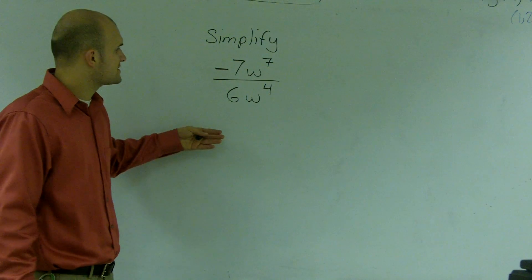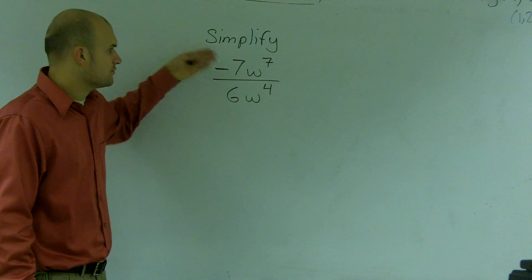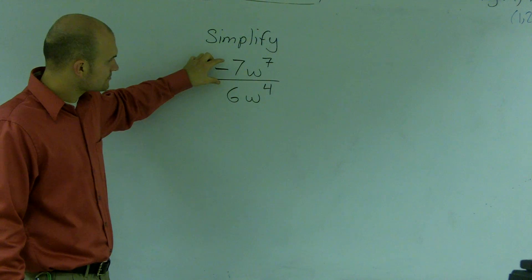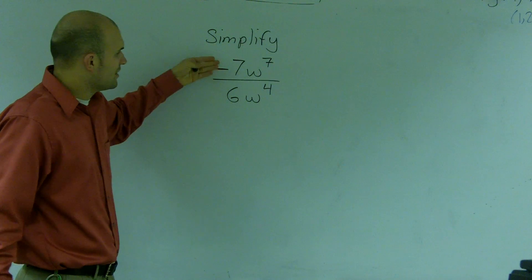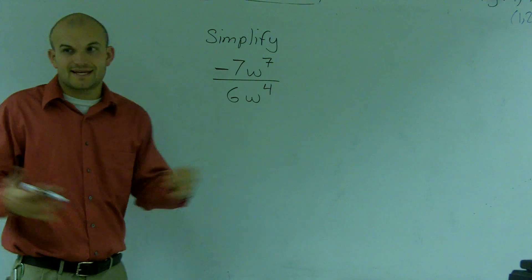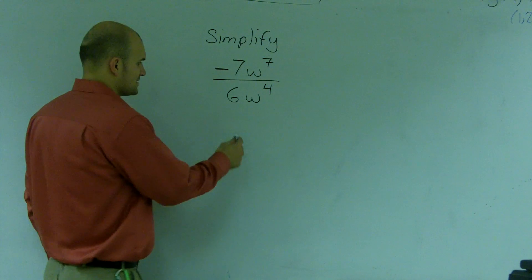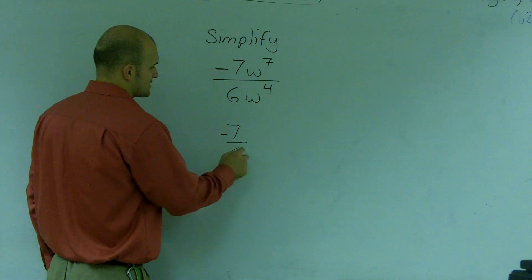So the first thing, whenever you're using the properties of exponents, what we're doing is dividing one number by another number. I can't do negative 7 divided by 6. I can't simplify that anymore. So I know my answer is going to include a negative 7 over 6.